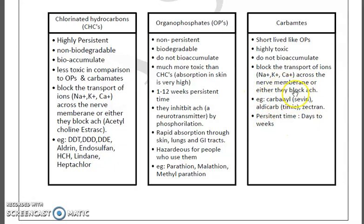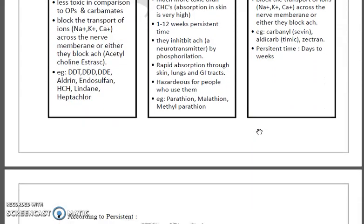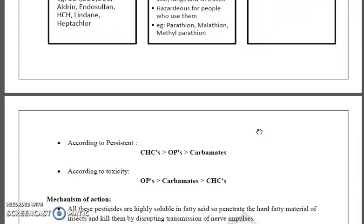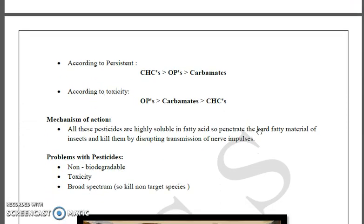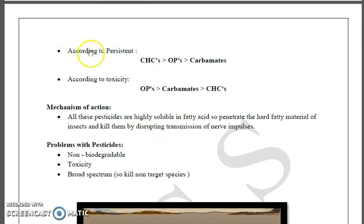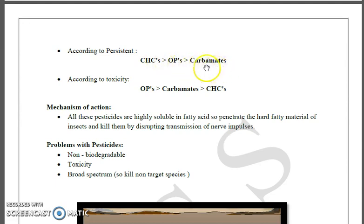Examples of carbamates include carbaryl, with the trade name Sevin, and aldicarb with the trade name Temik. Their persistency time is days to weeks. If the examiner asks you to arrange these three classes of pesticide according to their persistent nature, the order is: organochlorine pesticides are more persistent, followed by organophosphates, followed by carbamates.